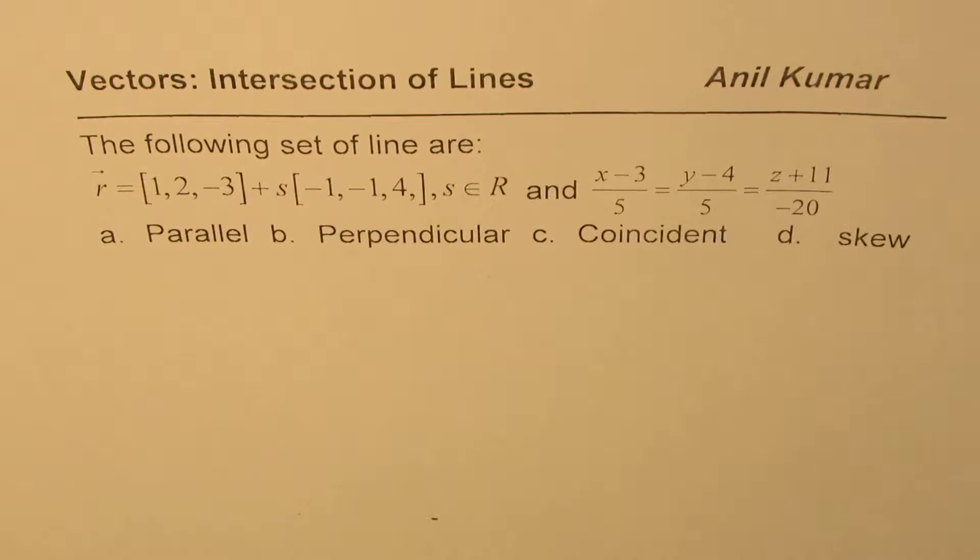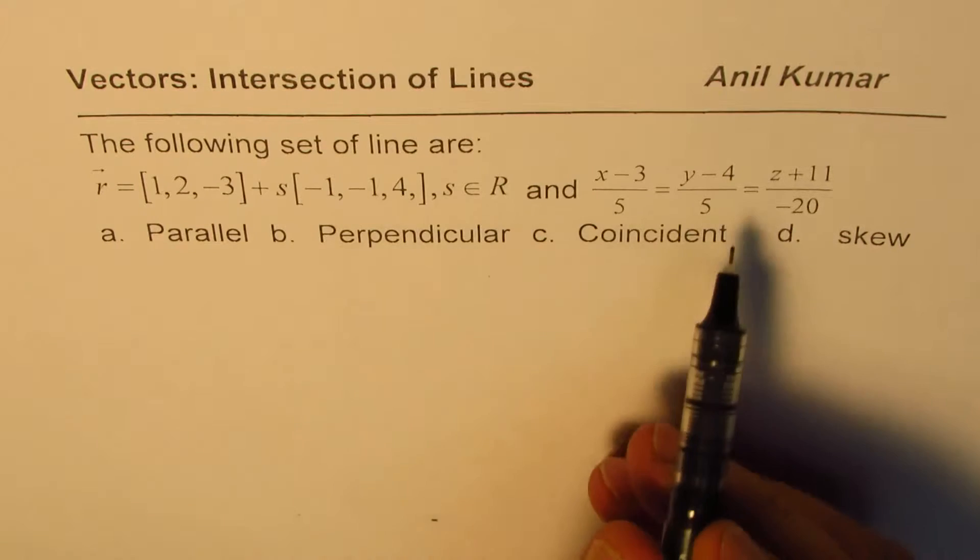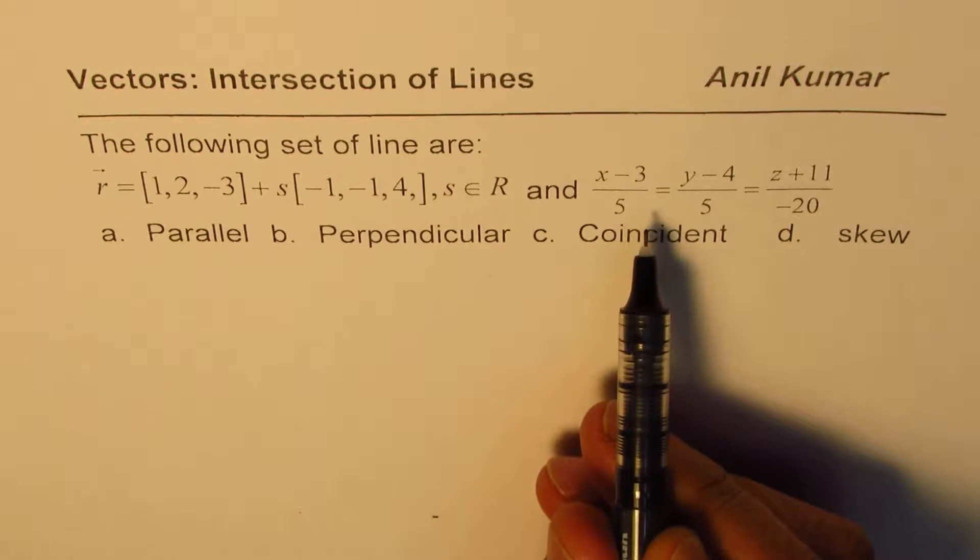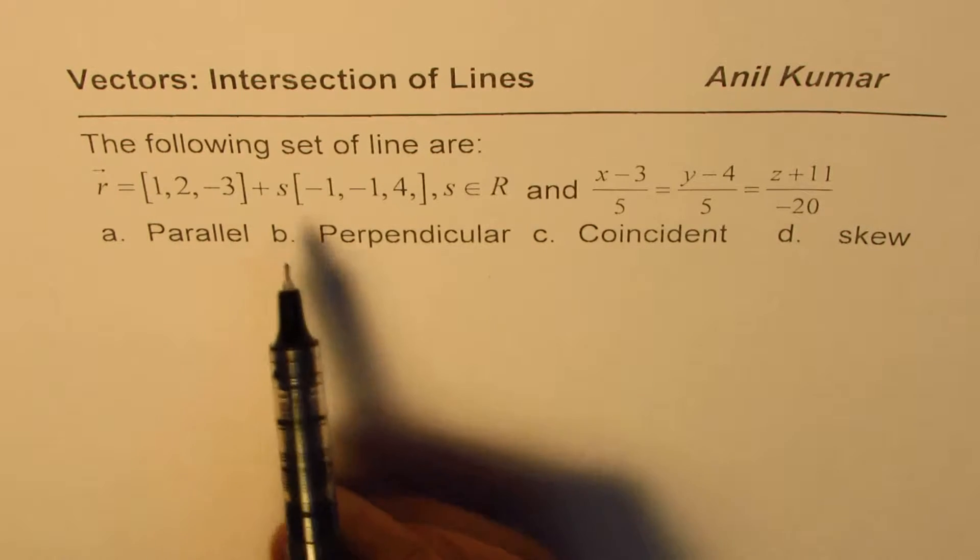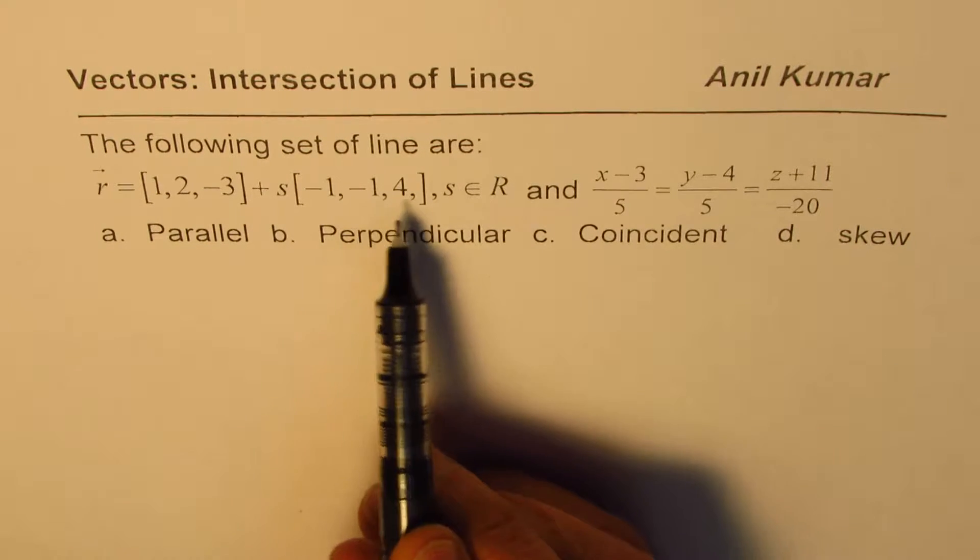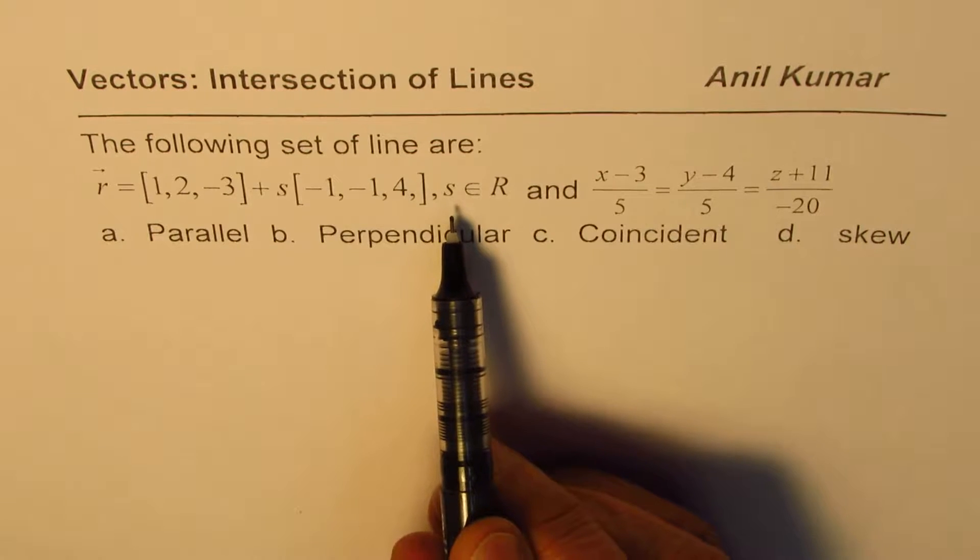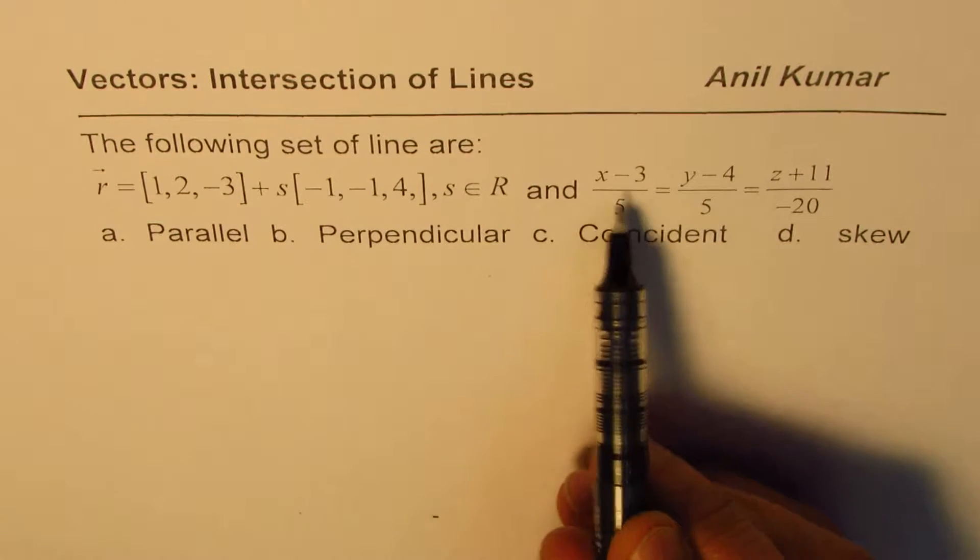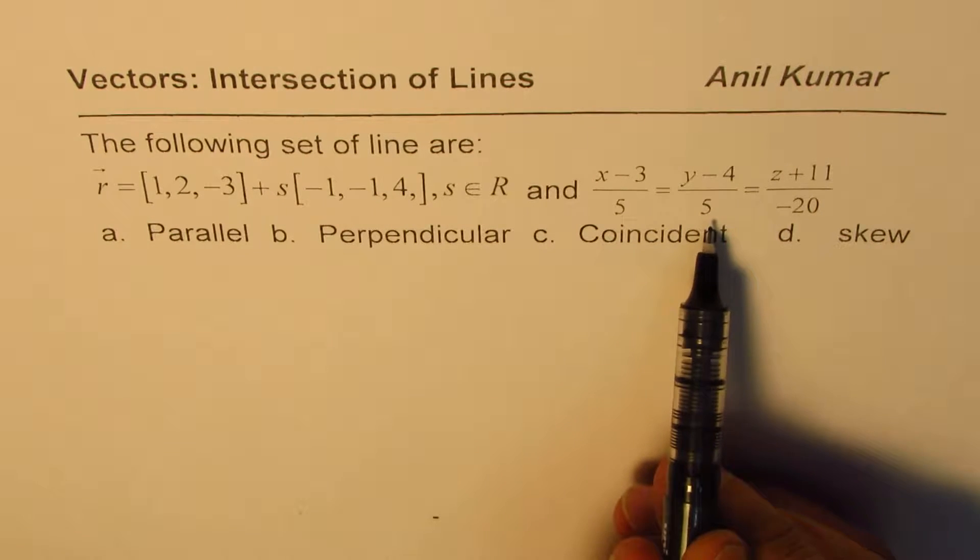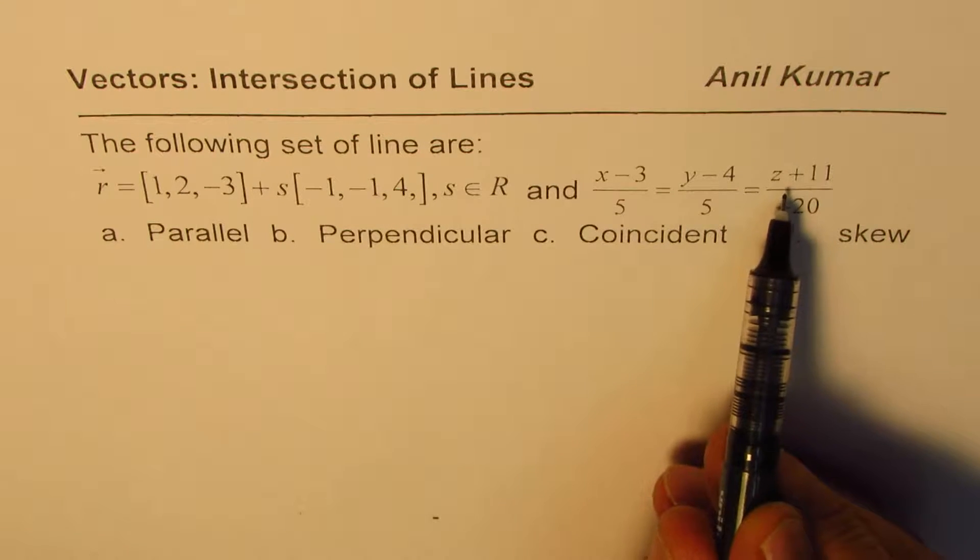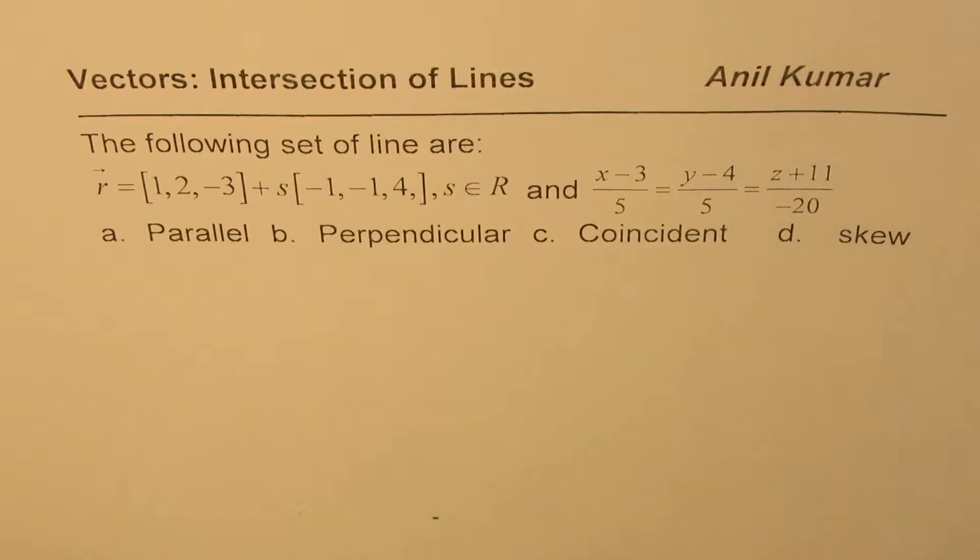I'm Anil Kumar and in this video we'll explore a set of lines. The question is: the following set of lines are given, one in vector form and the other in symmetric form. r equals (1, 2, -3) plus s times (-1, -1, 4) where s belongs to real numbers, and (x-3)/5 equals (y-4)/5 equals (z+11)/(-20).